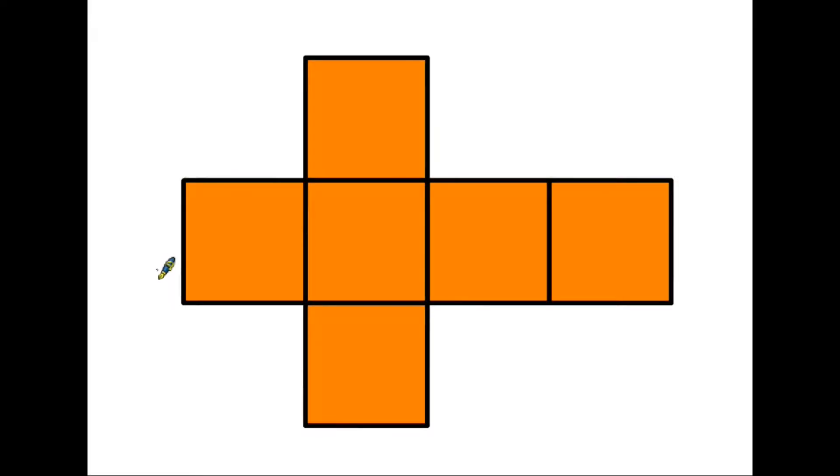And this pattern is in fact the net of the cube that we've just been looking at. These are one, two, three, four, five, six sides, and each of those sides would be six centimeters by six centimeters.